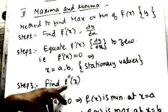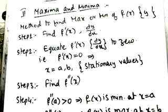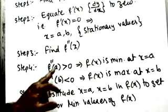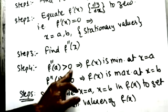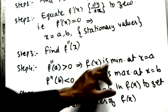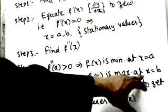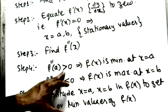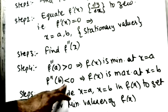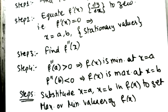Substitute the stationary values into f″(x). If f″(a) > 0, then f(x) is minimum at x = a. If f″(x) < 0 at that point, then f(x) is maximum. The last step is to substitute the stationary values of x into the original function f(x) to get the actual maximum or minimum values.